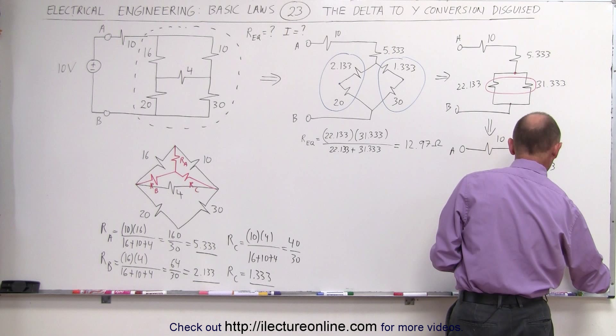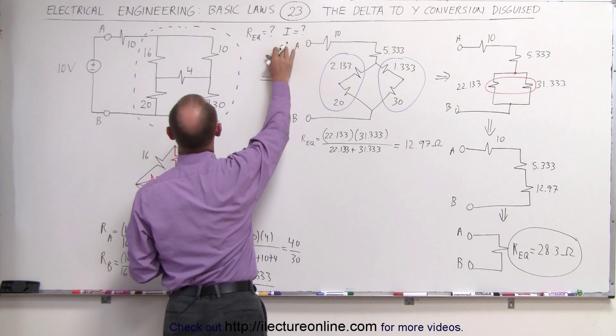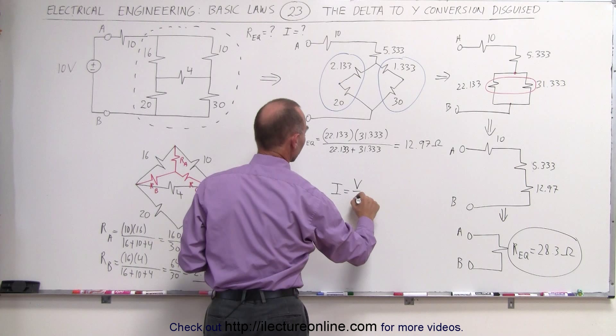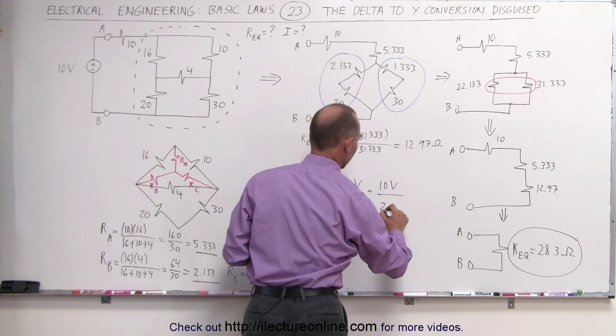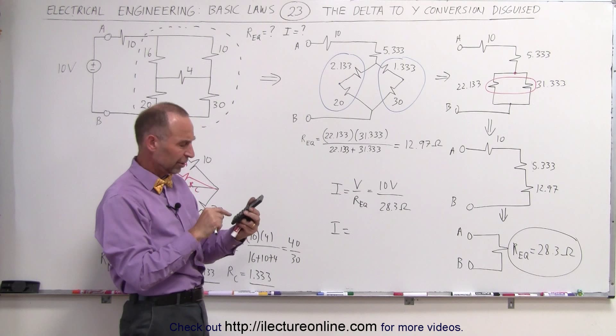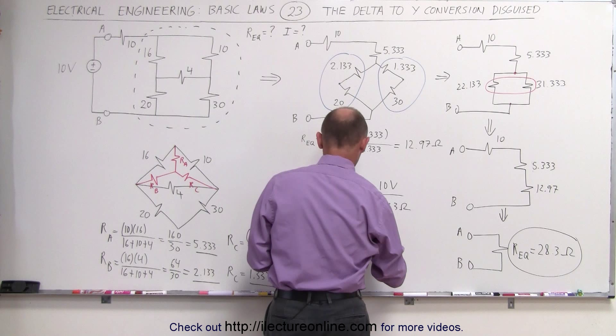And finally, if we want to find the current in the entire circuit, Ohm's law tells us that the current is equal to the voltage divided by the resistance equivalent of the whole circuit, which is equal to 10 volts divided by 28.3 ohms. And therefore, the final answer, take the inverse of that, times 10 equals the current 0.353 amps.